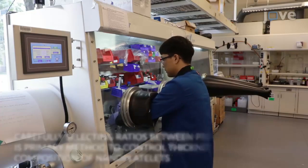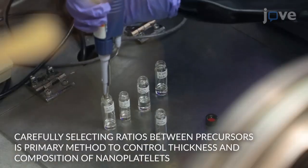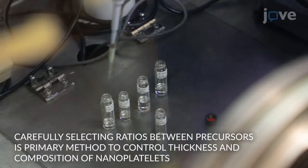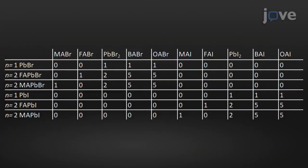To synthesize N=2 methyl ammonium lead bromide nanoplatelets, mix individual 1 milliliter volumes of the indicated 0.2 molar precursor solutions according to the table.